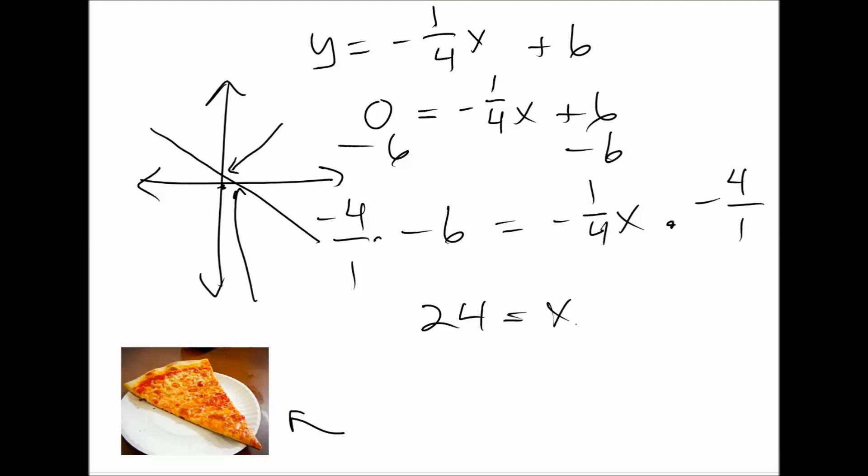This means that the x-intercept is at 24. So somewhere like really far over here at 24 comma 0, because y is equal to 0 there, x is equal to 24. That's the x-intercept.